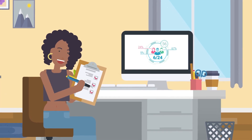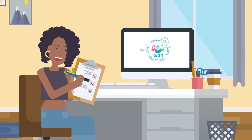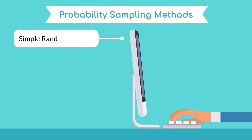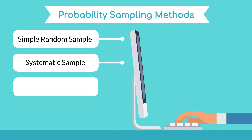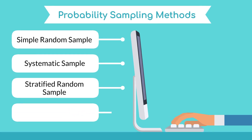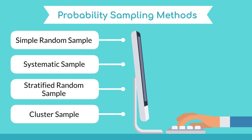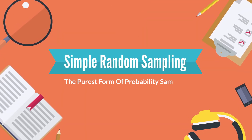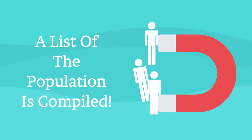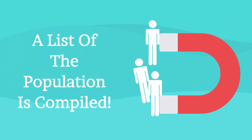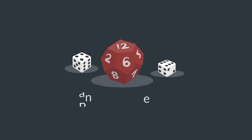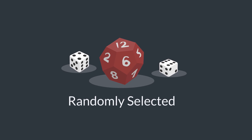Let us take a closer look at these two approaches. Probability sampling helps ensure that your sample is representative and unbiased. With this type of sample, you can use statistics to draw strong conclusions about the whole population. There are various methods of probability sampling: simple random sample, systematic sample, stratified random sample, and cluster sample. Simple random sampling is the purest form of probability sampling. With this technique, a list of the population is compiled, or you can use a table of random numbers.